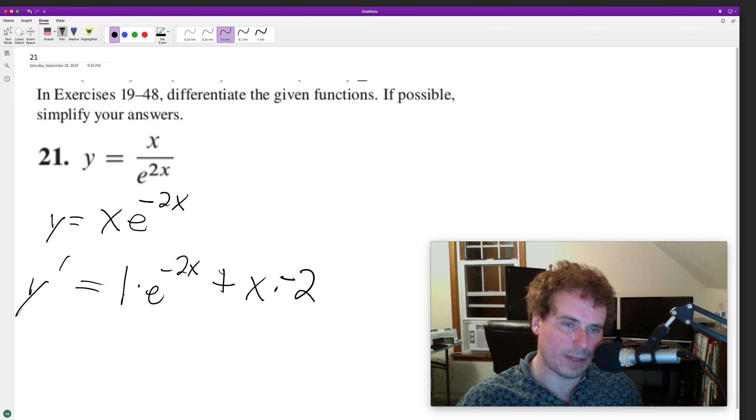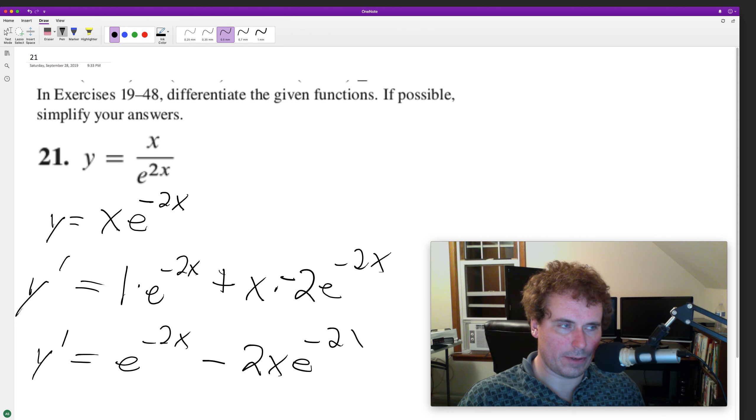The derivative of that is just negative 2 because the derivative of x is just 1, and then we get e raised to the negative 2x. So then y prime ends up being equal to e raised to the negative 2x minus 2x e raised to the negative 2x.